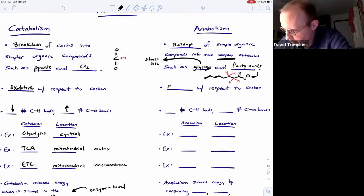So these processes store energy in the form of highly reduced C-H bonds. They are reductive with respect to carbon, and therefore when we're building a fatty acid or glycogen we will do reduction and increase the number of C-H bonds or decrease the number of C-O bonds.